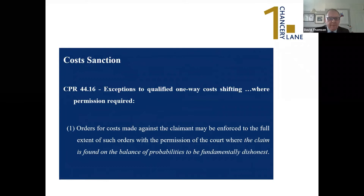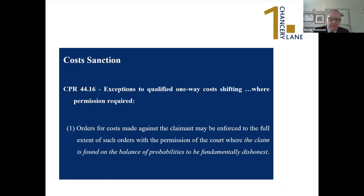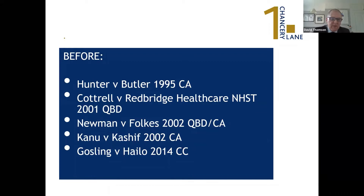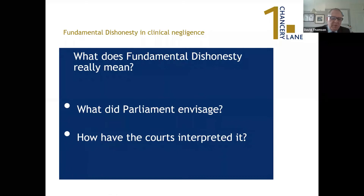As a cost sanction, CPR 44.16 provides the exception to the qualified one-way cost shifting rules. The pre-Act cases I've outlined — Hunter and Butler, Cottrell, Newman and Folk, Cannon and Gosling — are available to review. The question of what Parliament envisaged and how courts interpret fundamental dishonesty is what we are addressing.